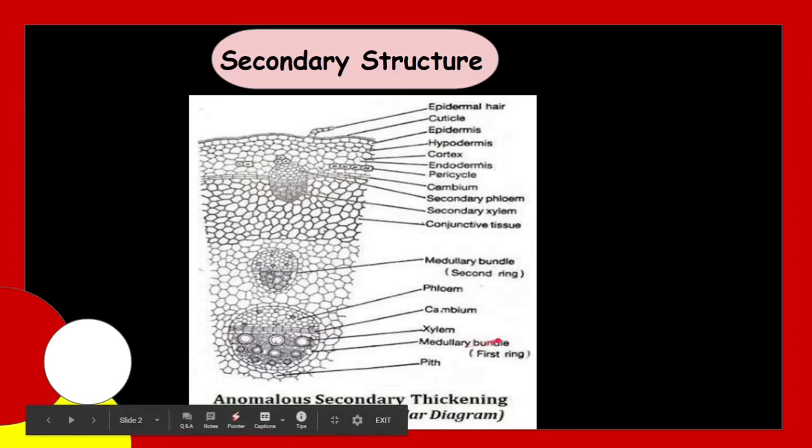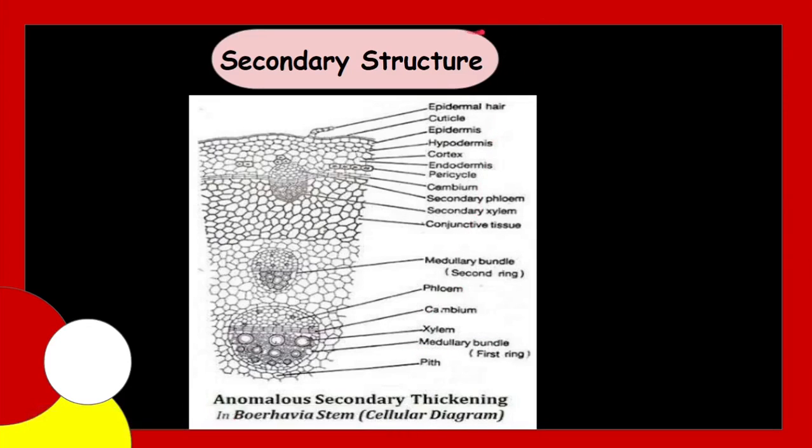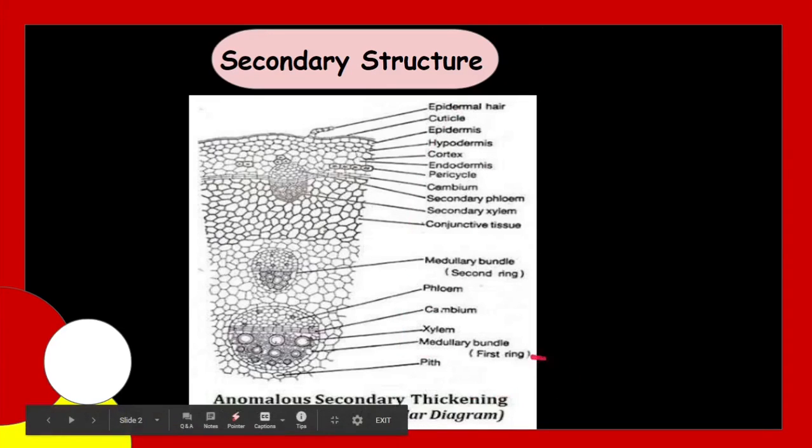The activity of this second ring of cambium again stops after producing a definite amount of secondary growth and third ring is formed. This means that the same process is repeated. About 4 or 5 successive cambium rings are produced and giving rise to 4 or 5 concentric growth rings like this first ring and this second ring. How many concentric growth rings occur? 4 or 5.